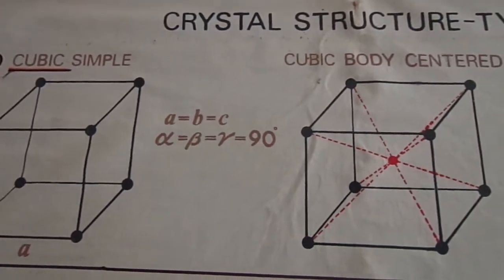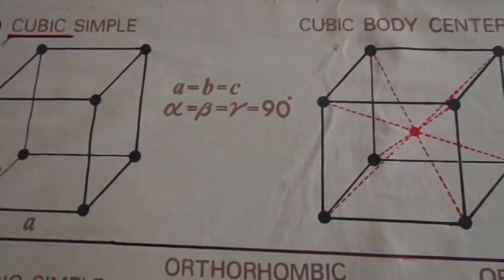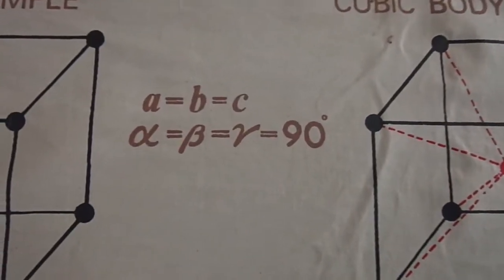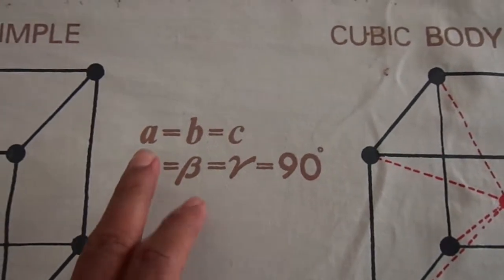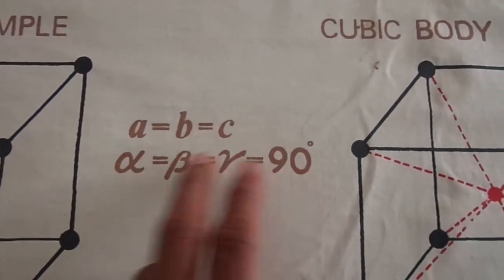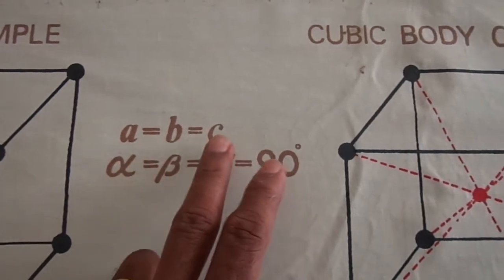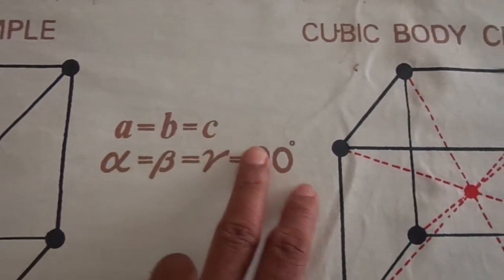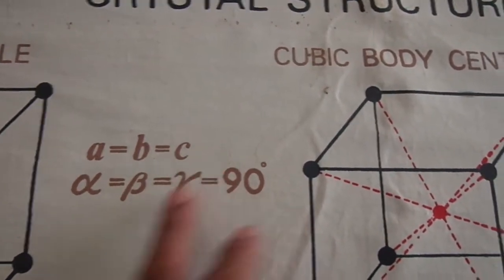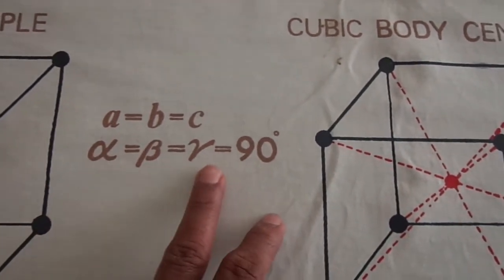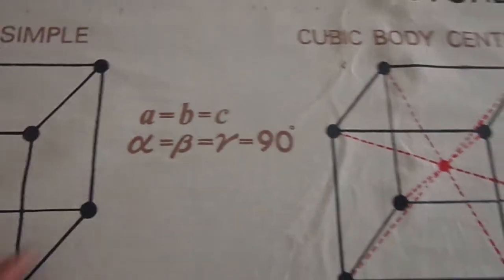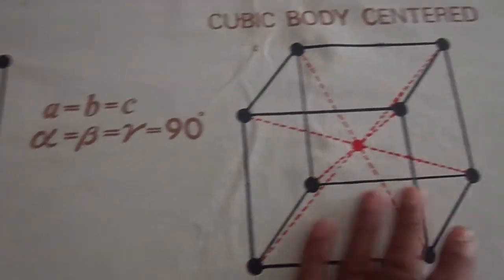In all crystal types, the classification is based on the lattice parameters. There are lattice parameters A, B, C representing the X, Y and Z coordinates, and alpha, beta, gamma representing the interaxial angles. Using these only, we classify things.